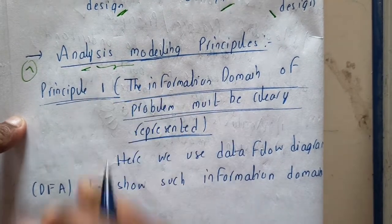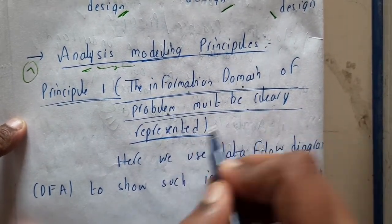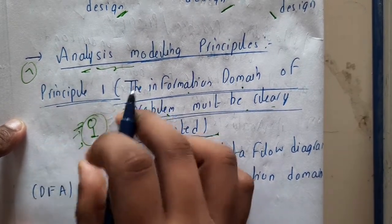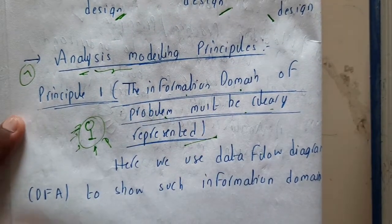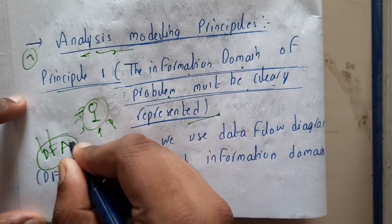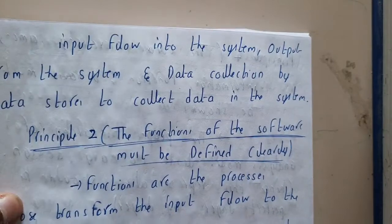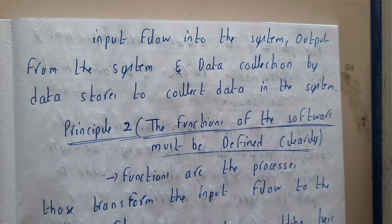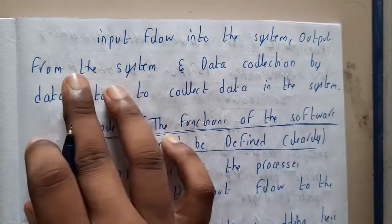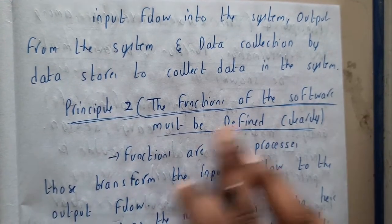The first principle: analysis is about analyzing models, not designing them. The information domain of the problem must be clearly represented. The data and domain of the problem should be represented clearly. Here we use a diagram called DFD — Data Flow Diagram — to show the information domain. Data flow diagrams are basically like flow charts: input flows into the system, output flows out, and everything in between is represented.